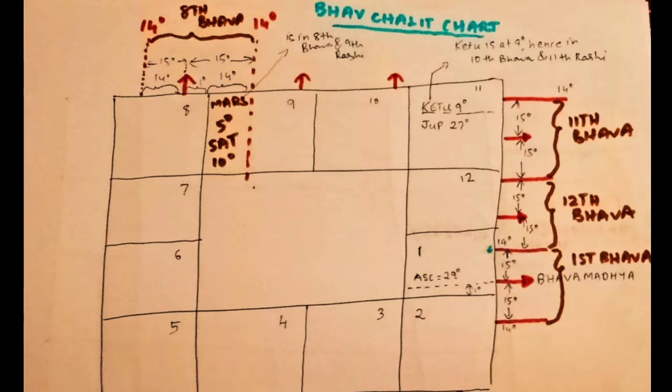Now, from this how do we derive the Bhava chart? To derive the Bhava chart there are many methods, but in this video we will use a method called Bhava Madhya. Look at the degree of the Ascendant or the Lagna. The degree of the Ascendant, as can be seen in the square labeled number 1, is 29 degrees. So this is called the Bhava Madhya — 29 degrees in the sign of Leo is the center of the first Bhava. Now every Bhava is 30 degrees in this method.